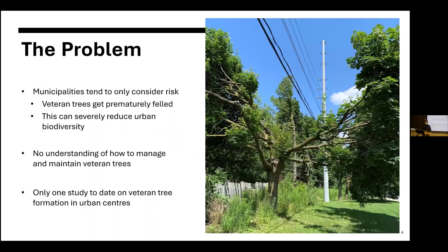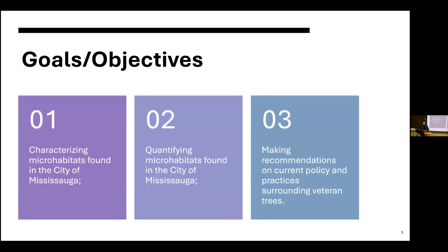The problem is that municipalities tend to only consider risk when looking at all trees and determining if they need to be felled or not. Microhabitats are typically perceived as risks rather than assets, which often leads to veteran trees being prematurely felled, severely reducing urban biodiversity. We also have no real understanding of how to manage and maintain these veteran trees — this isn't reflected in our arboricultural practices. There's only one study to date on veteran tree and microhabitat formation in urban centers, done by Grossman et al. in 2020 in the city of Montreal, which examined whether increased maintenance would increase the number of microhabitats found on trees. I essentially recreated their study in Mississauga with the goal of determining if increased maintenance would result in an increased number of microhabitats.